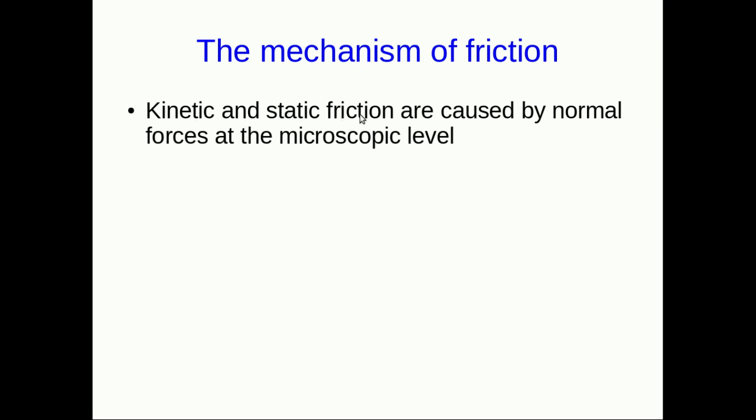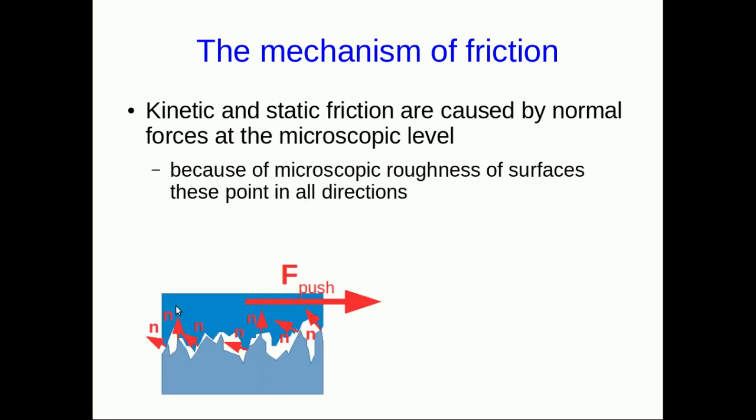it turns out that kinetic and static friction are caused by normal forces, but at the microscopic level. So because of surface roughness, those normal forces can point in all sorts of different directions. Now you've probably heard that on the microscopic, or at least on the atomic level, surfaces don't actually touch because atoms repel each other electrically. But we want to think on a slightly larger scale than that.